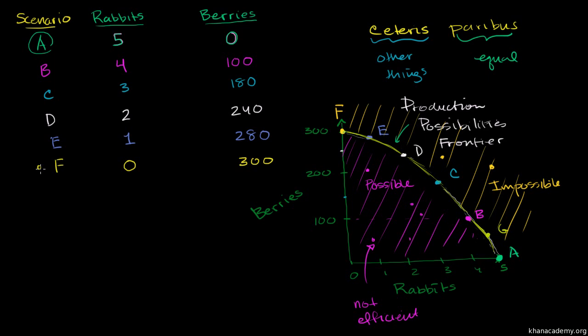So let's say we're starting off in Scenario F. We are vegetarians. We are only getting berries. We are not spending any time going after rabbits. But now we're starting to crave protein, and we say, what is going to be the opportunity cost if I go for that extra rabbit?